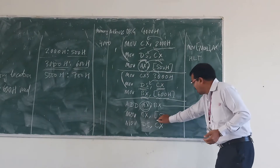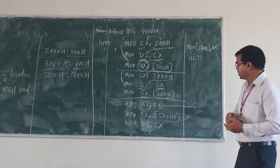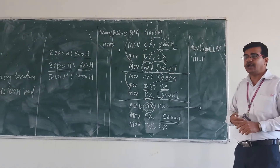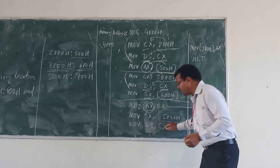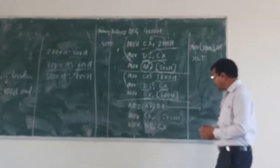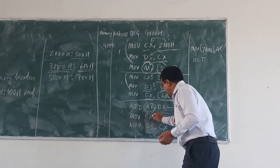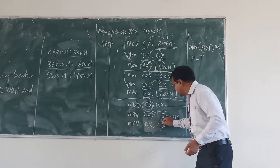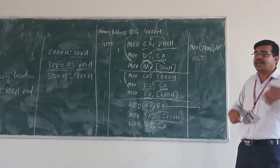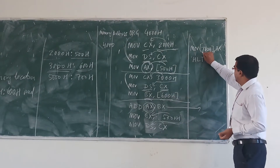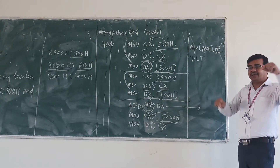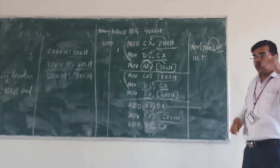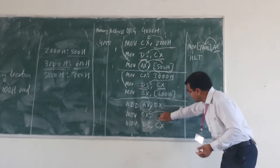Now MOV CX, 5000h. MOV DS, CX. We initialize the segment register again — 5000h is copied to the CX register and then assigned to the segment register DS. Then MOV [700h], AX. AX holds the result, and that result is stored to memory location 700h whose segment register is 5000h.